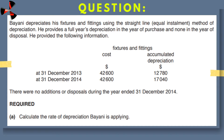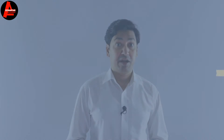What is the information here? First of all, the cost price as of 31st December 2013 is $42,600 and the accumulated depreciation is $12,780. In 2014, the cost price is the same — $42,600 — and the accumulated depreciation is $17,040. There were no additions or disposals during the year ended 31st December 2014. The requirement is to calculate the rate of depreciation Bayani is applying.